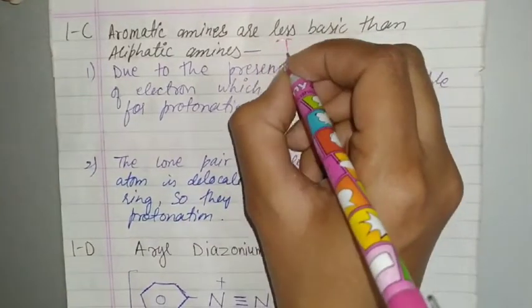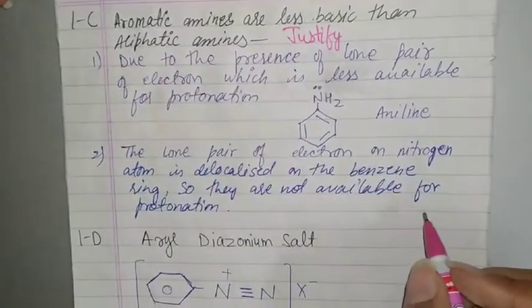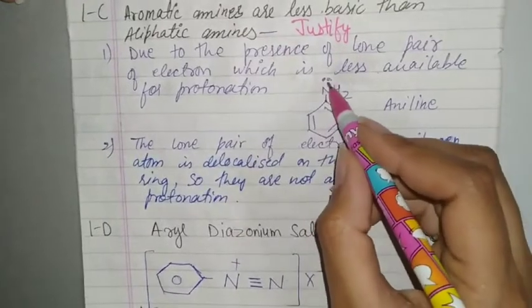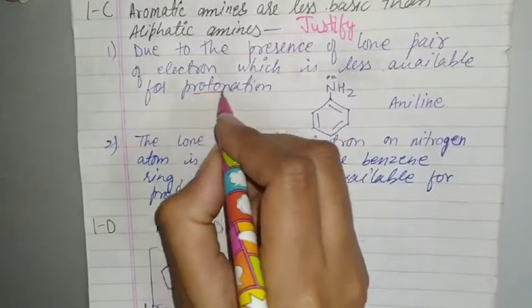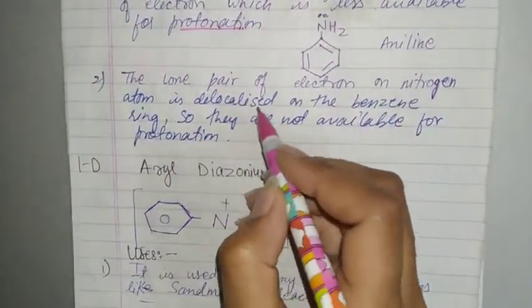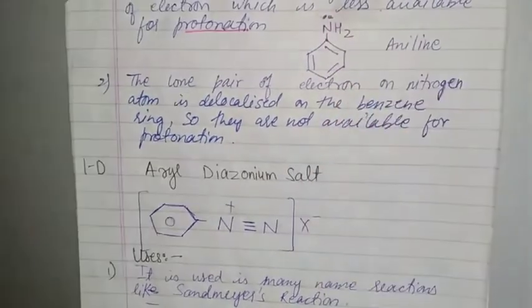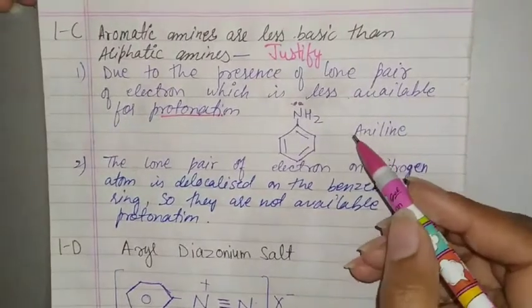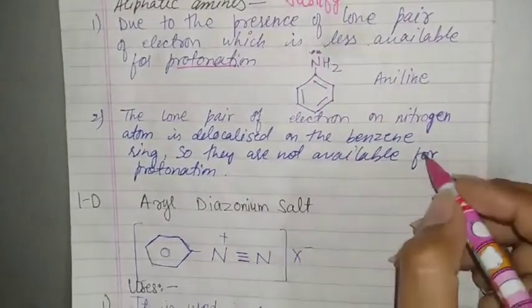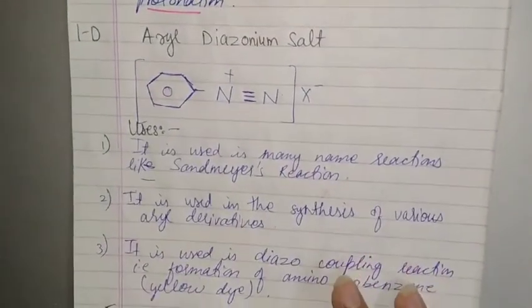Next question: aromatic amines are less basic than aliphatic amines. Justify the statement. We have two reasons: due to presence of lone pair of electrons which is less available for protonation. Protonation depends on the base density of amines. The second reason is that the lone pair of electrons on nitrogen atom is delocalized on the benzene ring, so they are not available for protonation.